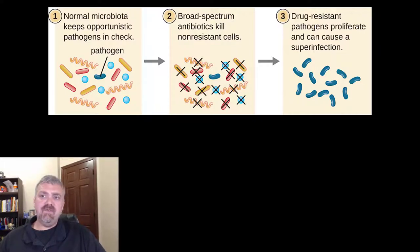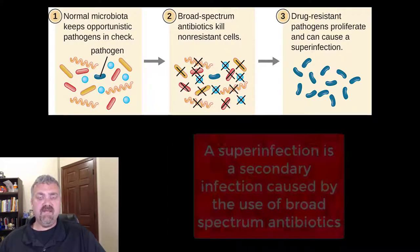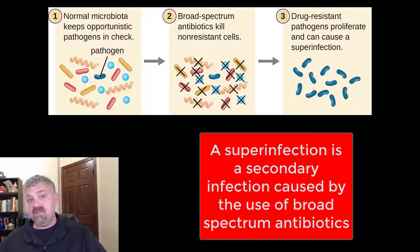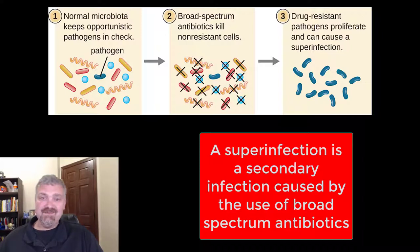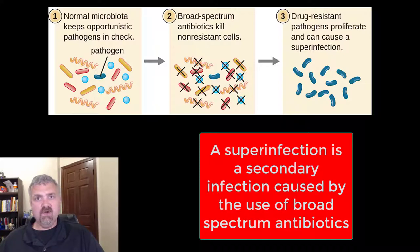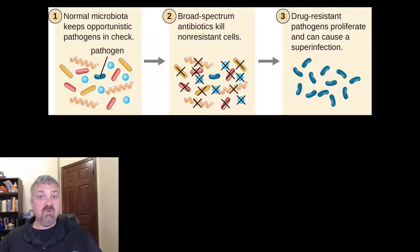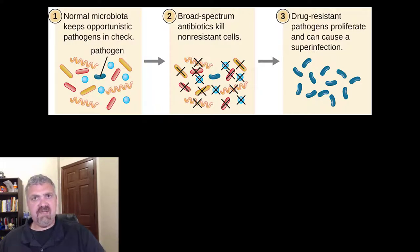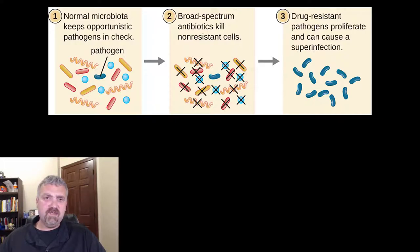That's what number three says: drug-resistant pathogens proliferate and cause a super-infection. A super-infection is an infection caused by taking antibiotics. It's a type of secondary infection, but not because your immune system got weak — it's because you took antibiotics, killed off the good guys that were holding the bad organisms in check, and now they're able to take over. The most common examples of super-infections are C. diff — if you've ever smelled C. diff, you'll never forget it — and candida yeast infections, because broad-spectrum antibiotics don't kill yeast.